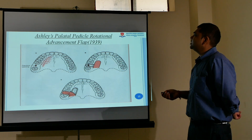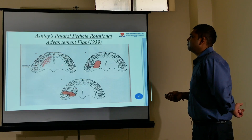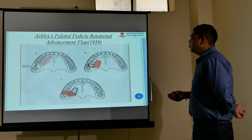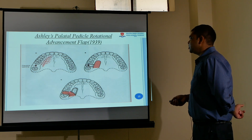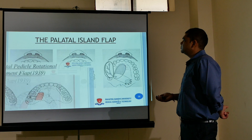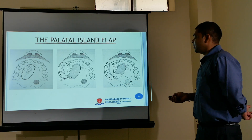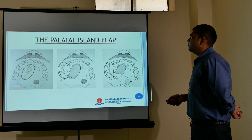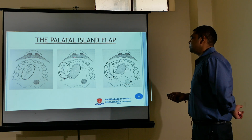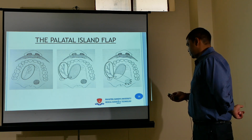For the palatal flap: a flap is taken with the blood supply of the palate, rotated, and placed into the socket. For the palatal island flap, a complete island is taken from the palate, moved with its blood supply, and complete suturing is done with rotation.